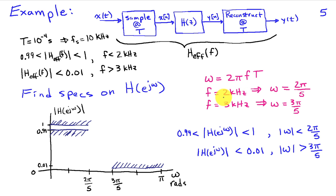So this implies that the edge of our pass band at 2 kilohertz corresponds to a discrete time frequency of 2 pi over 5. And the edge of our stop band at 3 kilohertz corresponds to a discrete time frequency of 3 pi over 5.